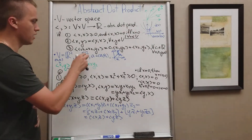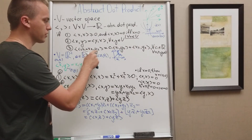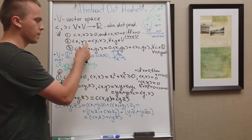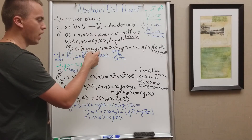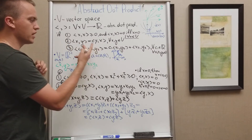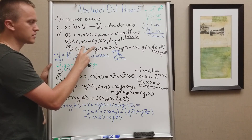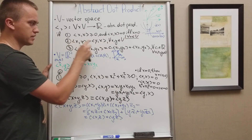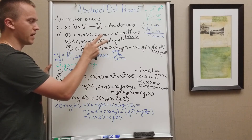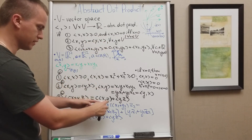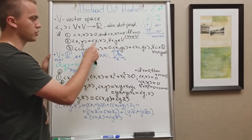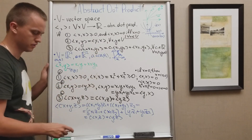Another thing we can note is that the dot product is also linear in the second component. This follows by using the second axiom: if y is written as a combination of some vectors, we swap y and x, expand using linearity in the first component, then swap back. This shows linearity in the second component as well.